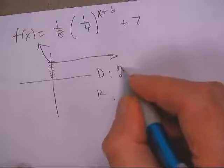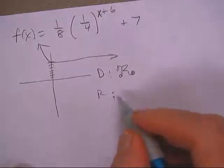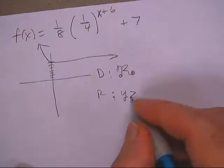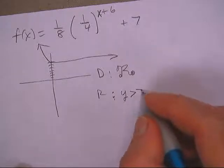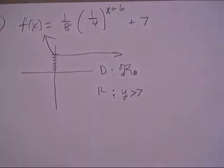I got domain, that's all the real numbers on the domain. The range is y is greater than seven. Doesn't actually ever get there, I guess.